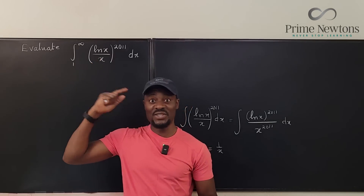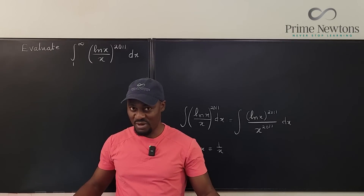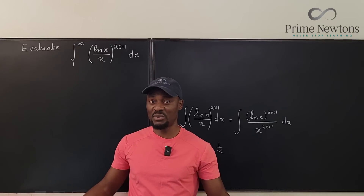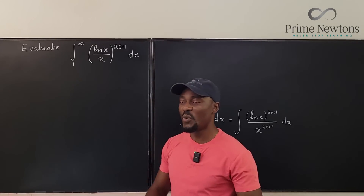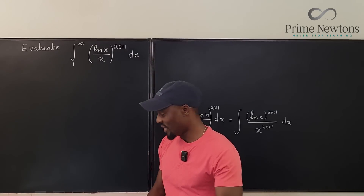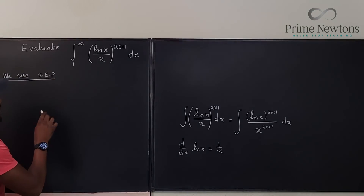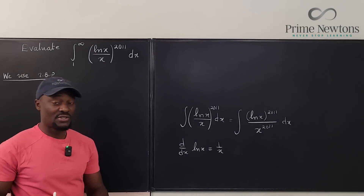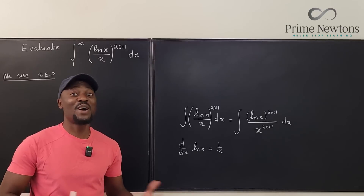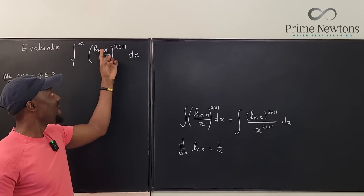When you can't use u-substitution and you have a natural log function, the next thing you're thinking is integration by parts. If you thought that, you're correct — it has to be integration by parts. The question is: what would I take as my u and what would I take as my dv? One thing I know for sure is that the natural log part is what you're going to differentiate — you don't have a choice.